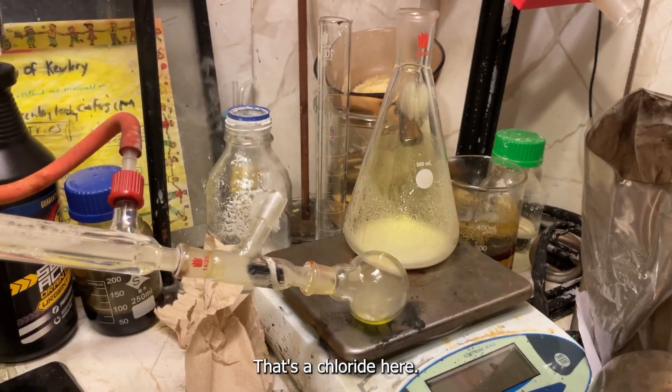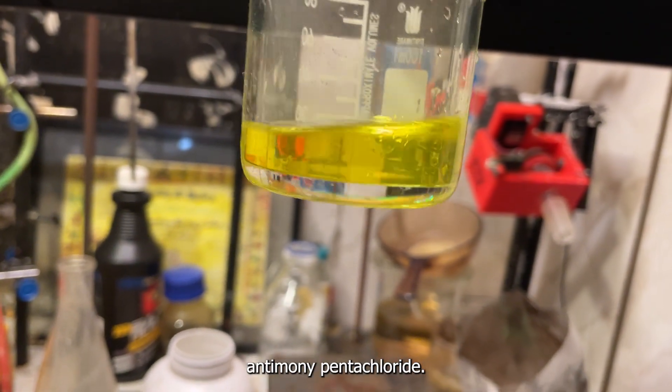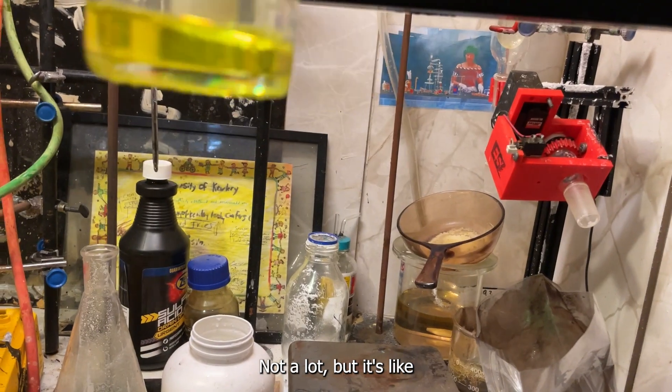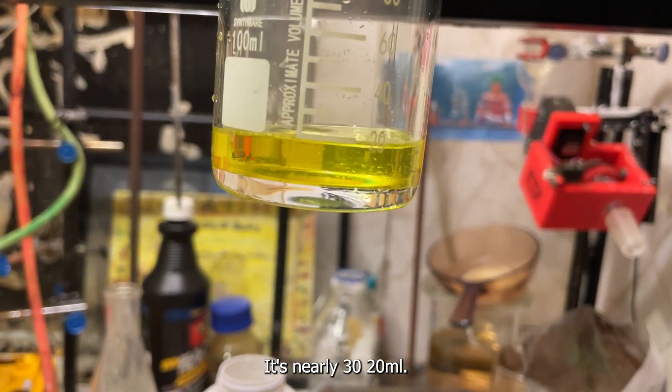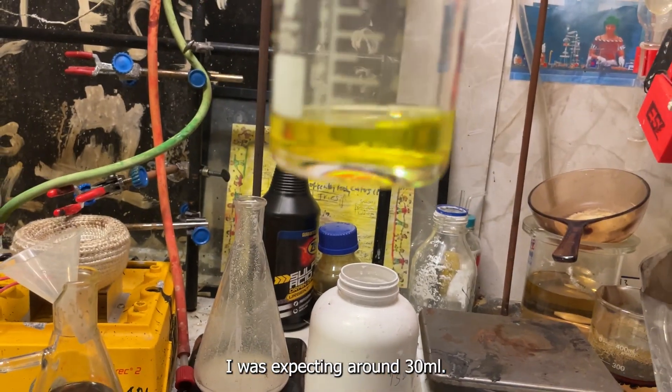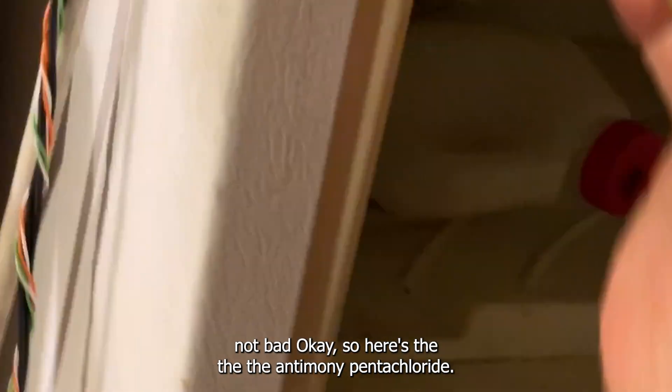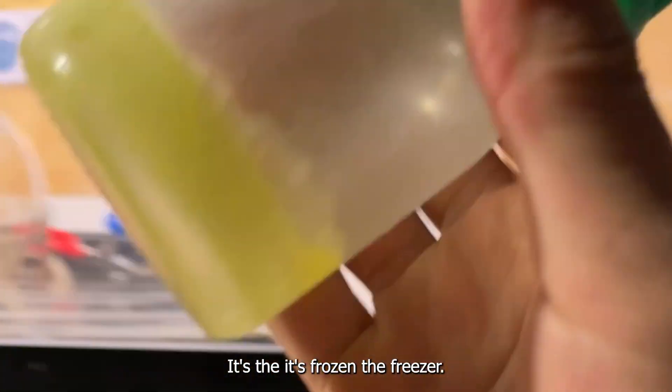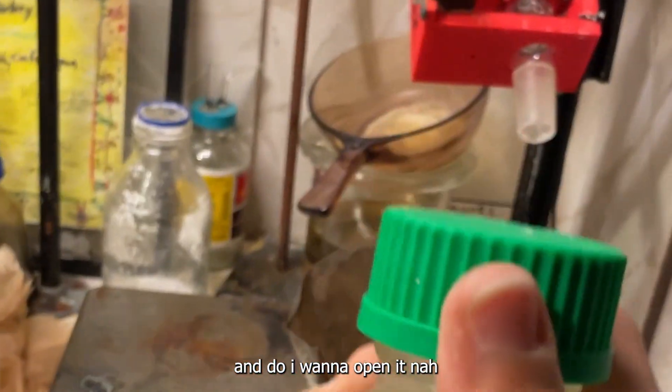So there's our final antimony pentachloride. Not a lot, but it's a decent amount. It's nearly 30, you know, 20 milliliters. So that'd be 75% yield. I was expecting around 30 milliliters, I believe. But not bad. Okay, so here's the antimony pentachloride. You can see it's frozen in the freezer. So this is pentachloride. So that's a good sign. And I don't wanna open it. Nah. Back in there it goes.